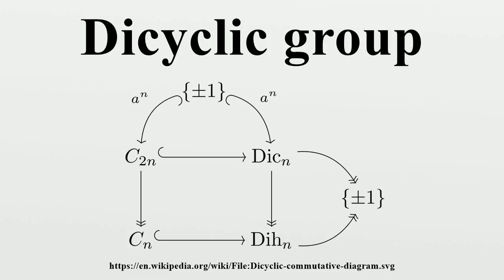The dicyclic group is a binary polyhedral group. It is one of the classes of subgroups of the pin group PIN⁻, which is a subgroup of the spin group SPIN, and in this context is known as the binary dihedral group. The connection with the binary cyclic group C₂ₙ, the cyclic group Cₙ, and the dihedral group Dₙ of order 2n is illustrated in the diagram at right, and parallels the corresponding diagram for the pin group.